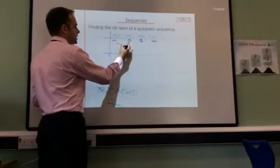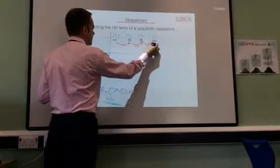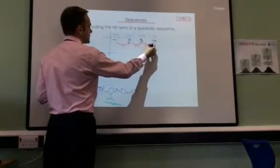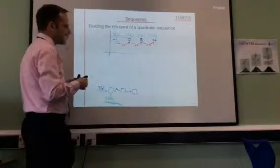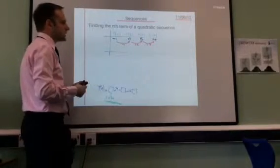We go up by plus 1, plus 5, and then plus 9. It's not constant, the numbers are different. So we need to look at the second difference.